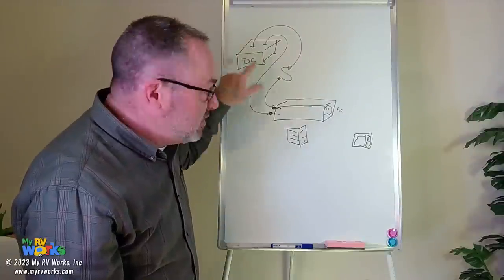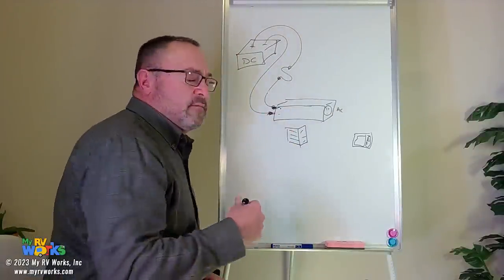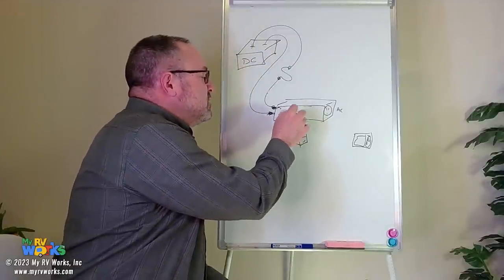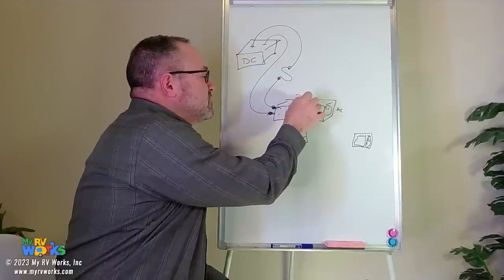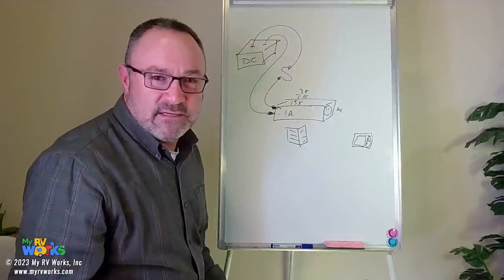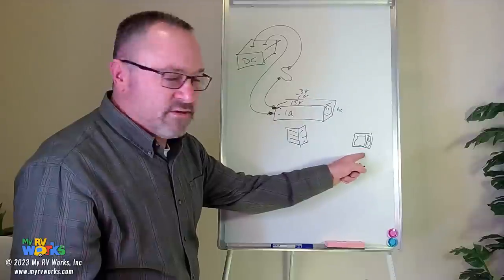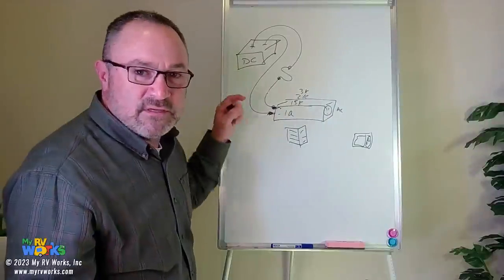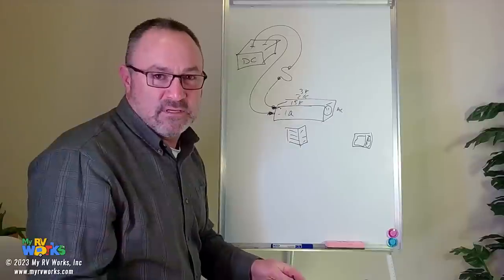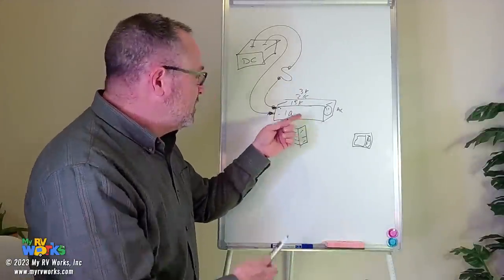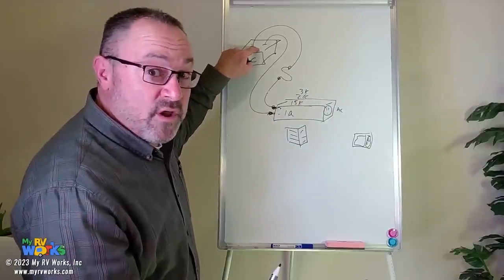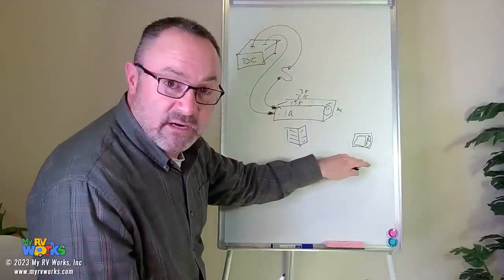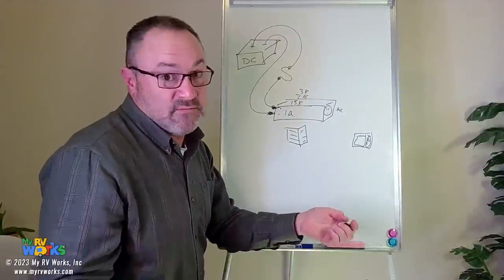Inverters come in a range of sizes — typically 1000, 1500, 2000, or 3000 watts are common sizes for RVs. How do you know what size to get? It depends on how many appliances you're going to run at any given time. If you're interested, I'm happy to go into the math on how to determine inverter size, what battery bank you need, and how big a solar array you need to charge that battery — let us know in the comments.